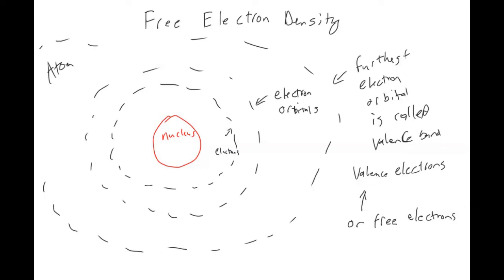So we were talking about electrons bumping into each other. If you have a bunch of free electrons in your material, it's easy for them to bump into the electron next to them because they're not confined to a nucleus. The free electron density is just how many free electrons you have within your material — the number of free electrons divided by some volume. That's a property of the material, and different metals have different free electron densities, which determines how good a conductor that material is.